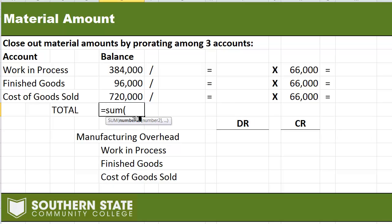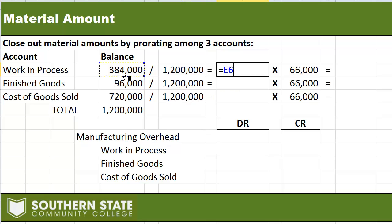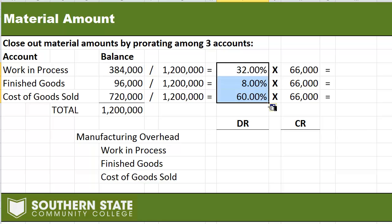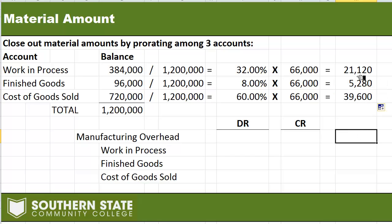I'm going to add up work in process, finished goods, and cost of goods sold — I come up with $1.2 million. Then I divide each line item by $1.2 million to get a prorated amount. Work in process: $384,000 divided by $1.2 million = 32%. Finished goods: $96,000 divided by $1.2 million = 8%. Cost of goods sold gives us the remaining 60%. We take each percentage and multiply it by the $66,000 over-applied overhead amount, and those are the numbers we need for our journal entry.